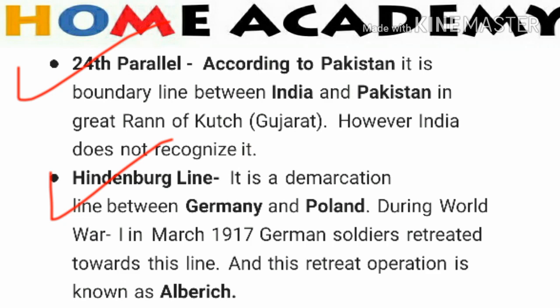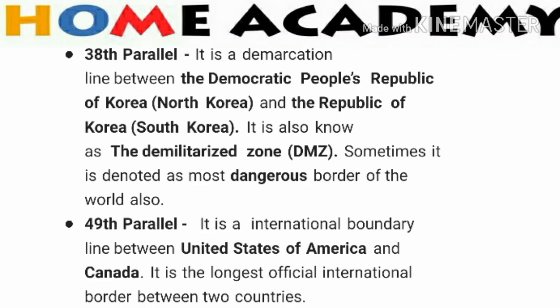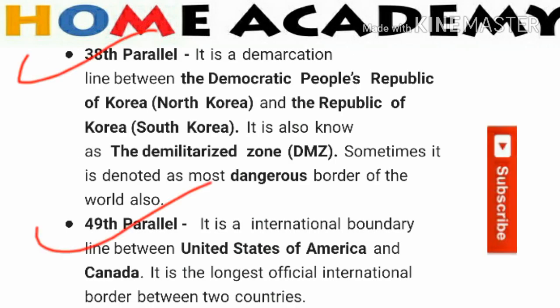The next line is the Hindenburg Line. It is a demarcation line between Germany and Poland. During World War One, in March 1917, German soldiers retreated towards this line. This retreat operation is known as Operation Alberich. Remember the name of the retreat operation — Alberich.